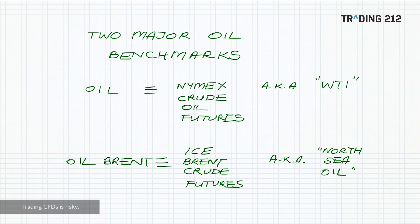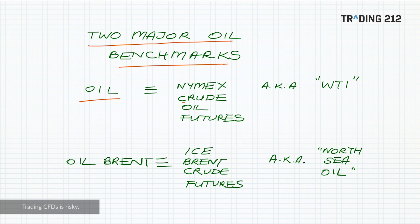So we saw in the app two types of oil trading at two different prices, and they're based on what are considered two major oil benchmarks. The first one, called just oil in the app, is a CFD that is analogous or equivalent in some ways to crude oil futures that trade on the New York Mercantile Exchange or NYMEX, which is part of CME. This type of oil is also known as West Texas Intermediate or WTI.